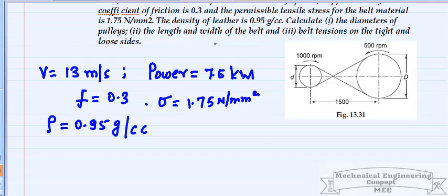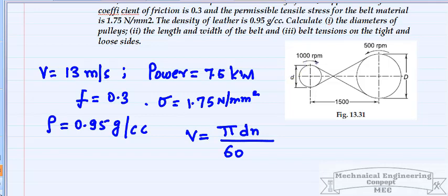We need to calculate the diameter of the pulleys, length and width of the belt, and belt tension on the tight and loose sides. To calculate the diameter of the smaller pulley, we use the relation between velocity and diameter: v = πdn/60.